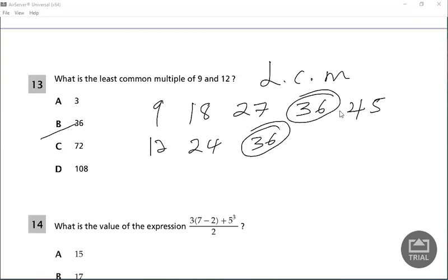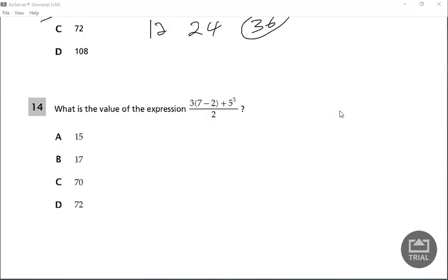Let's look at question 14. What is the value of the expression 3(7-2) + 5³ divided by 2? This is order of operations, so we do the power part first. 5 times 5 times 5 gives you 125. Next we do what's inside the bracket: 7 minus 2 which works out to 5.